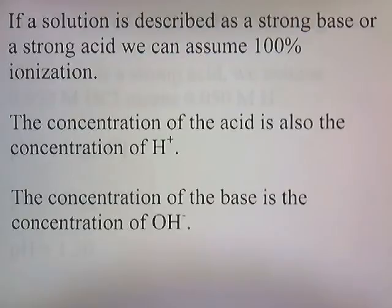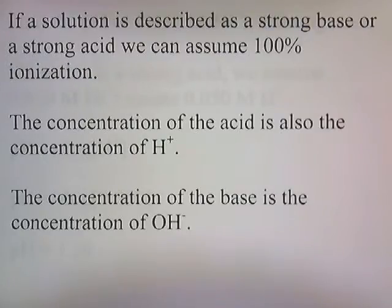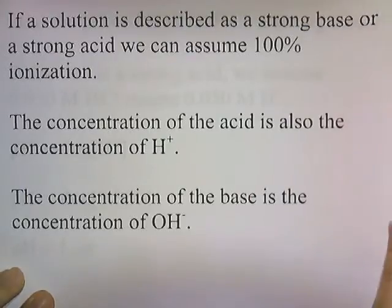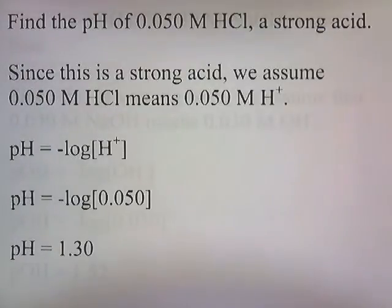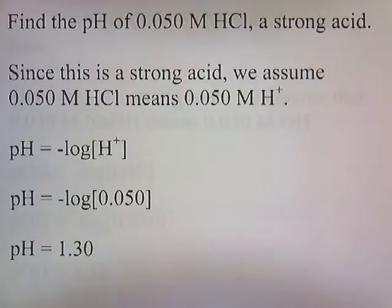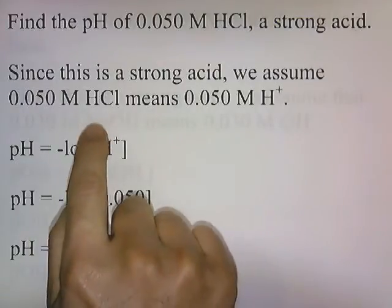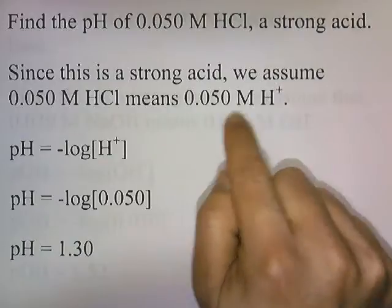If a solution is described as a strong base or a strong acid, we can assume 100% ionization. The concentration of the acid is also the concentration of H⁺, and the concentration of the base is the concentration of hydroxide. So let's try some problems. Find the pH of 0.050 molar HCl, a strong acid. Since this is a strong acid, we assume that 0.050 molar HCl means 0.050 molar H⁺.